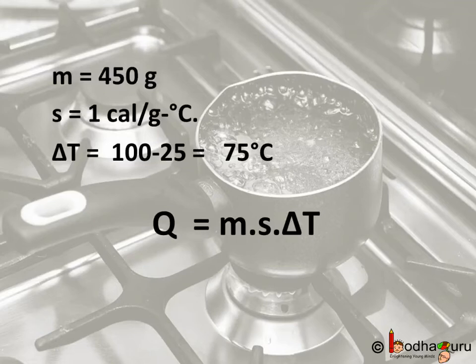Now, delta T is the change in temperature, and this is equal to 100 minus 25, which is equal to 75 degree Celsius.